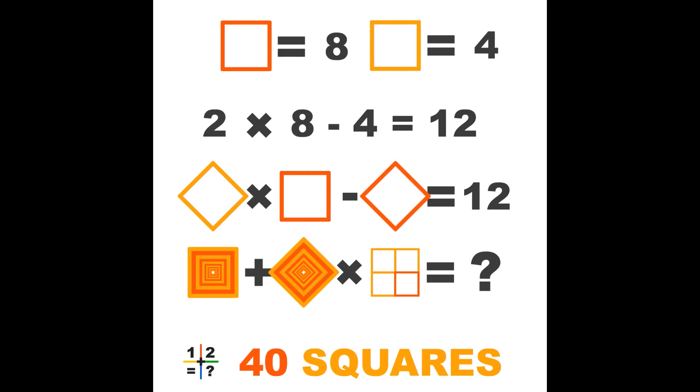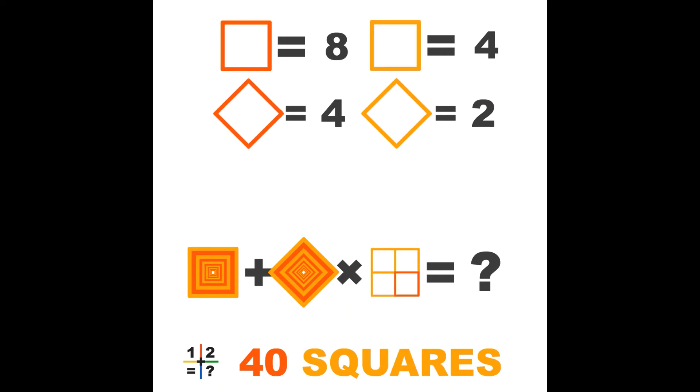Then it must be the second. 2 times 8 minus 4 equals 12. Yes, that is correct. So now we know that if the squares are turned, the value is 50% of the original value.